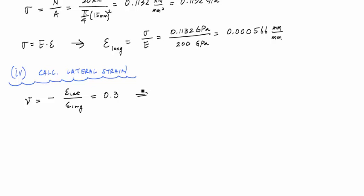And that would tell me that the lateral strain is negative 0.3 times the longitudinal strain, which is 0.000566 millimeter per millimeter. And this, when I calculate this, is a really small number. Again, negative 0.0001698 millimeter per millimeter. The negative indicates it got shorter, right? The diameter in the lateral dimension in the lateral dimension got shorter right here.